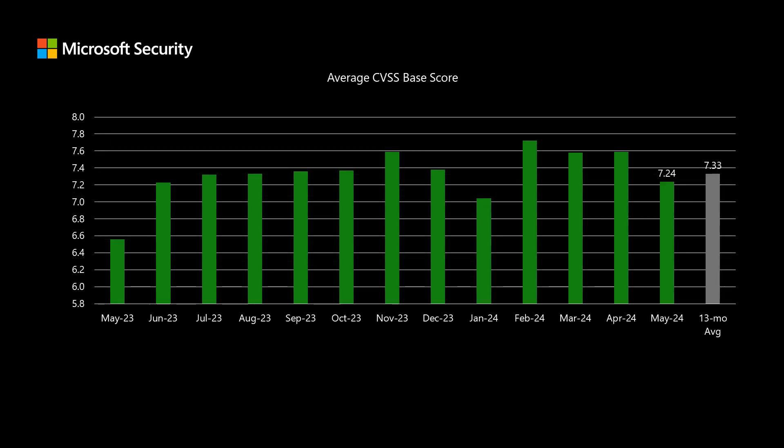If we look at the average CVSS score across all 61 vulnerabilities, the average comes out to 7.24, which is about a tenth of a point lower than average, and our average is 7.33.